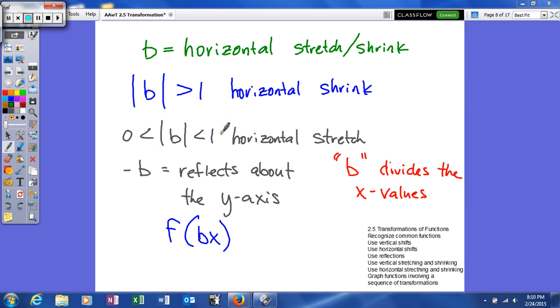Where, if your b value is a fraction or decimal, positive or negative, in between 0 and 1, you're going to have a horizontal stretch. So, again, just like the other ones, it's actually going to move your graph. It's going to affect the horizontal shape of your graph.